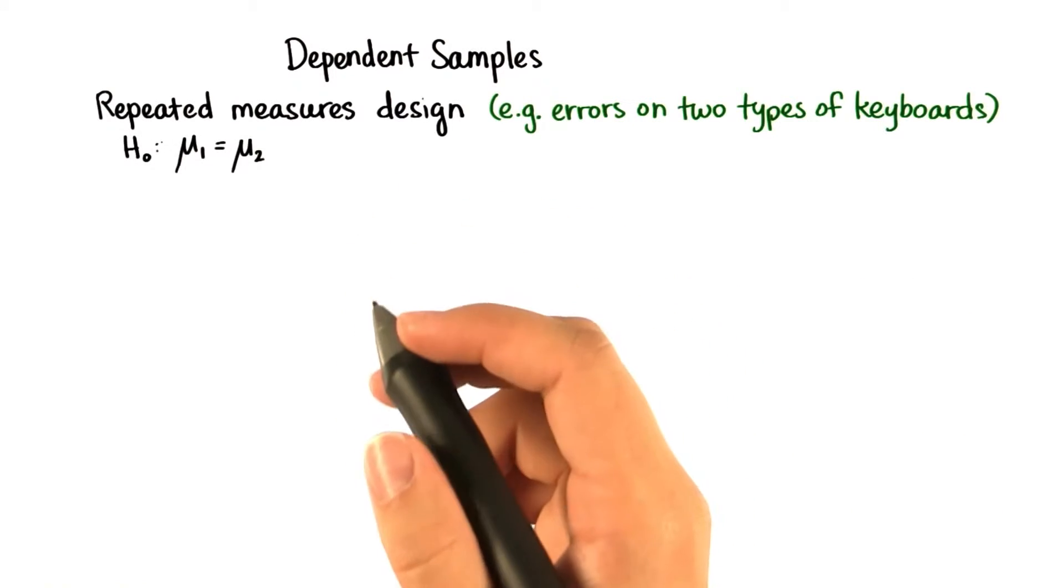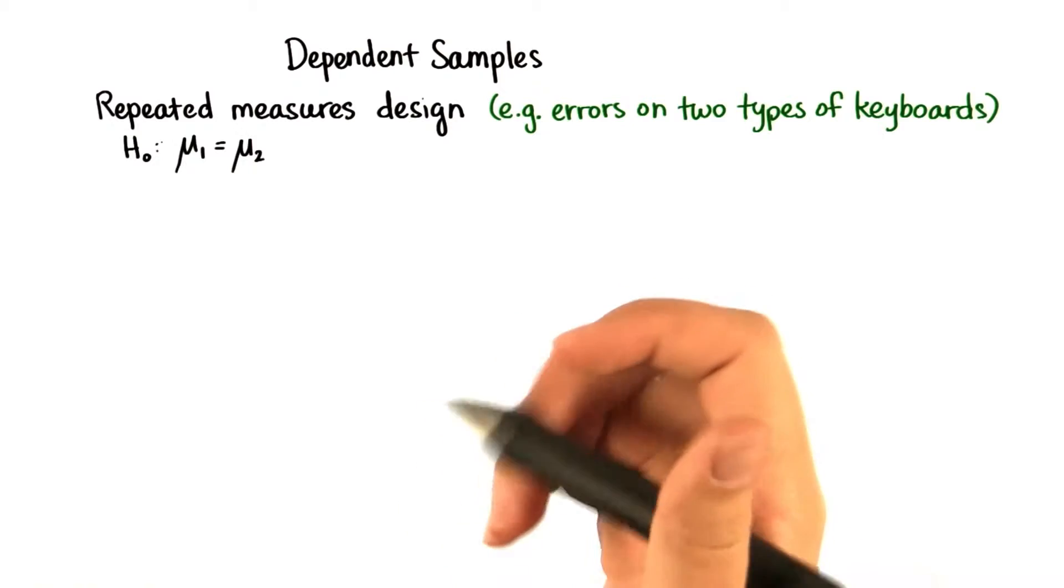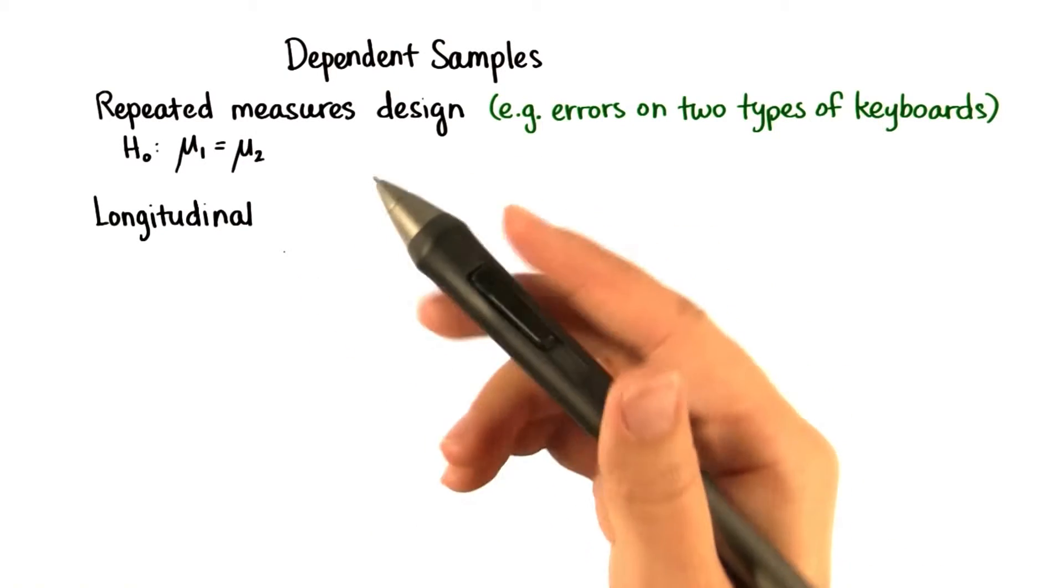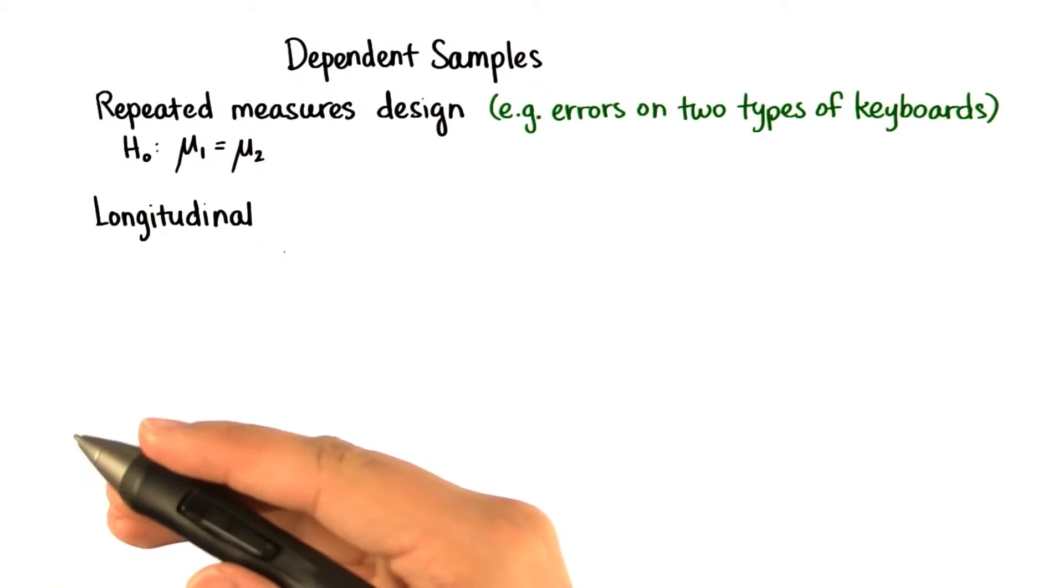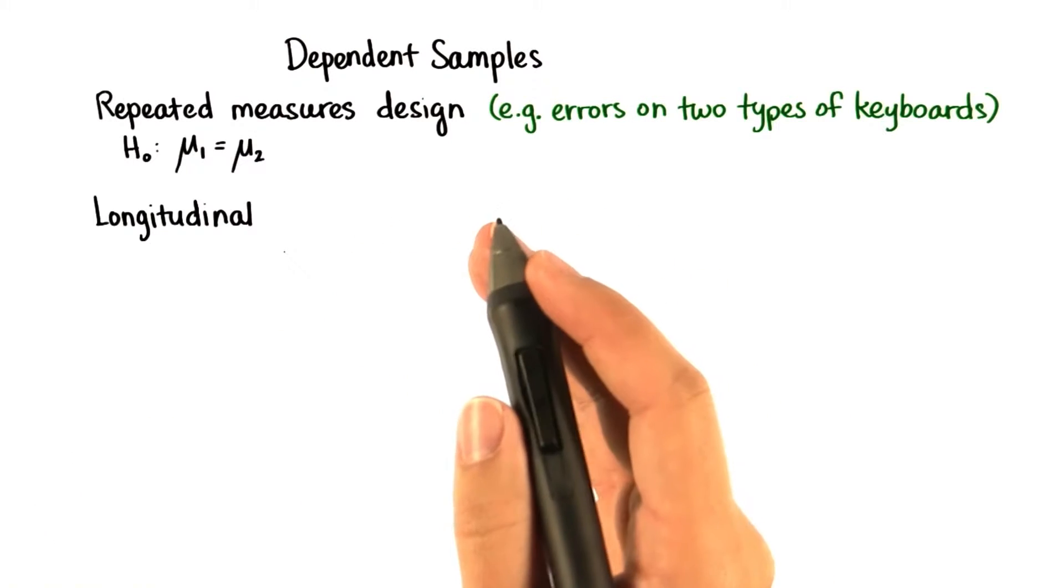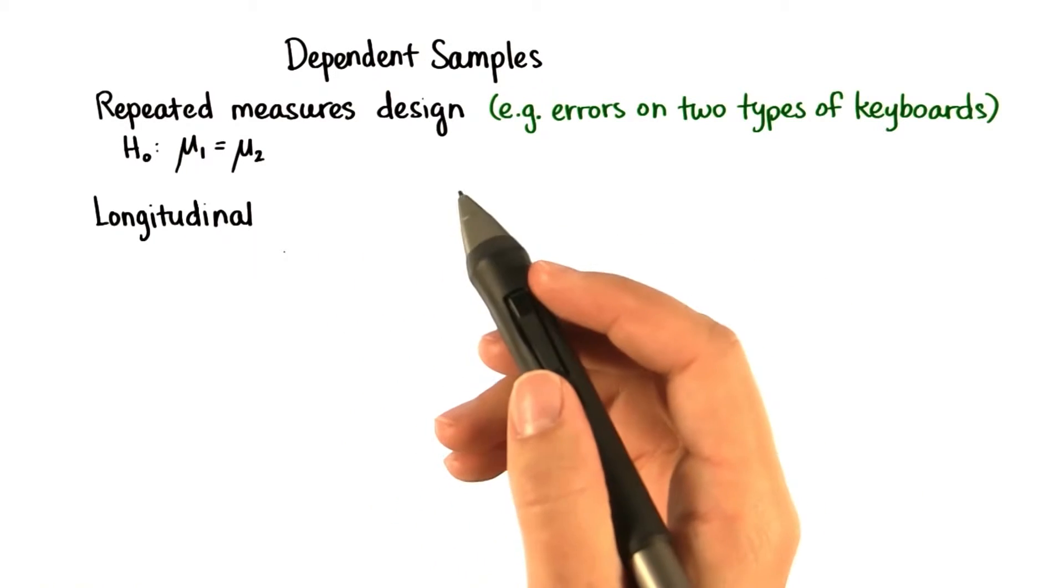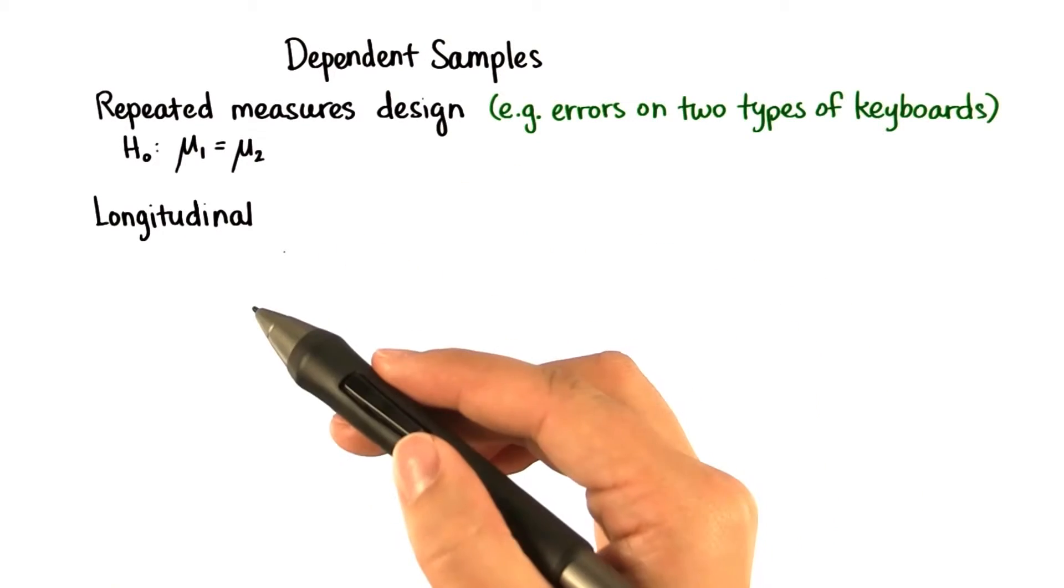Before we finish this lesson, I'll tell you about two other types of dependent samples t-tests. One is a longitudinal design, where we measure a variable at one point in time, and then we measure the same variable for the same sample at a later point in time. We want to know if there's a significant difference between the variable at time one and time two.